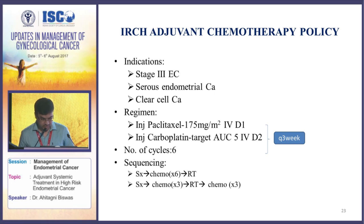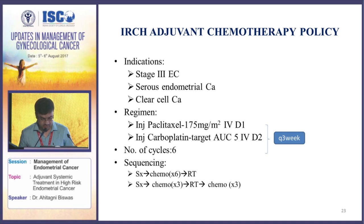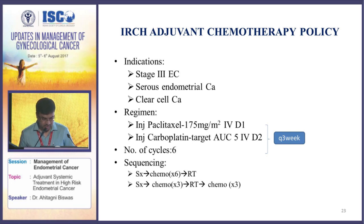Coming to our institution's adjuvant chemotherapy policy, we give systemic chemotherapy in patients with stage 3 endometrial cancer and in all stages with serous and clear cell carcinoma. The regimen we use is paclitaxel 175 mg/m² IV day 1 and carboplatin target AUC 5 IV day 2 — they can also be given on the same day for logistic reasons — every 3 weeks for a total of 6 cycles. The ideal sequence is surgery followed by 6 cycles of chemotherapy, followed by pelvic external beam RT, followed by brachytherapy; or alternatively, a sandwich approach of 3 cycles of chemotherapy, then RT, then 3 more cycles of chemotherapy.